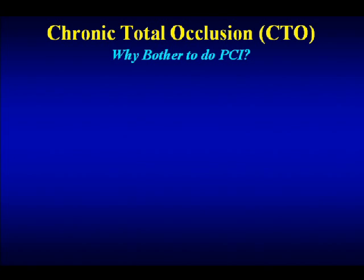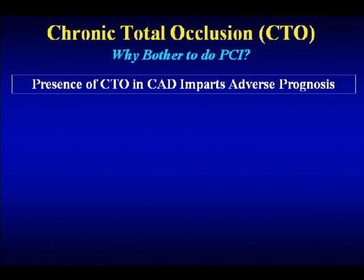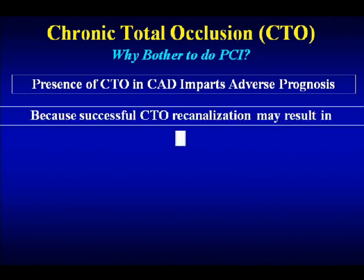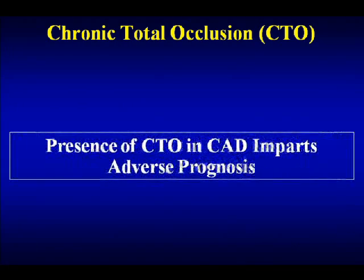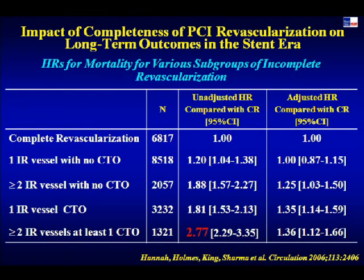We always have to justify which case we are doing for CTO. Why bother with PCI? Two important points: first, the presence of CTO in CAD imparts adverse prognosis. The New York State database showed that two-vessel disease with CTO had clearly higher mortality at three years compared to two-vessel disease without CTO — an odds ratio of 1.88 rising significantly with the CTO present.